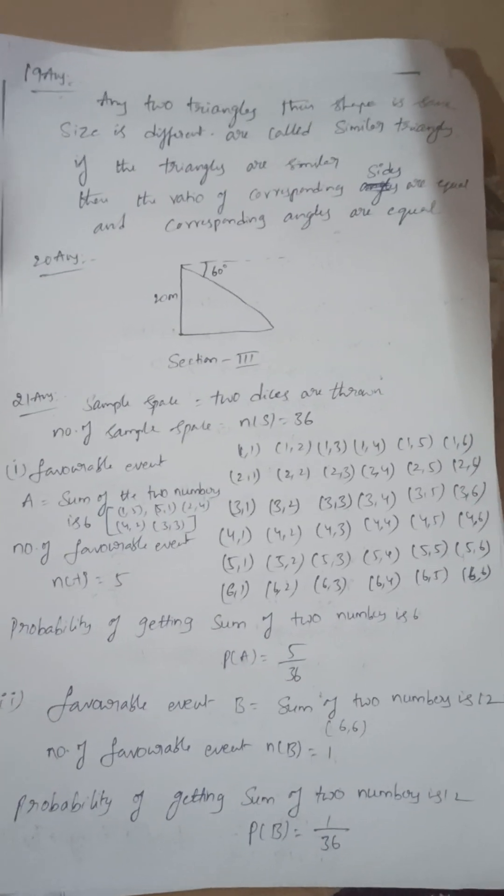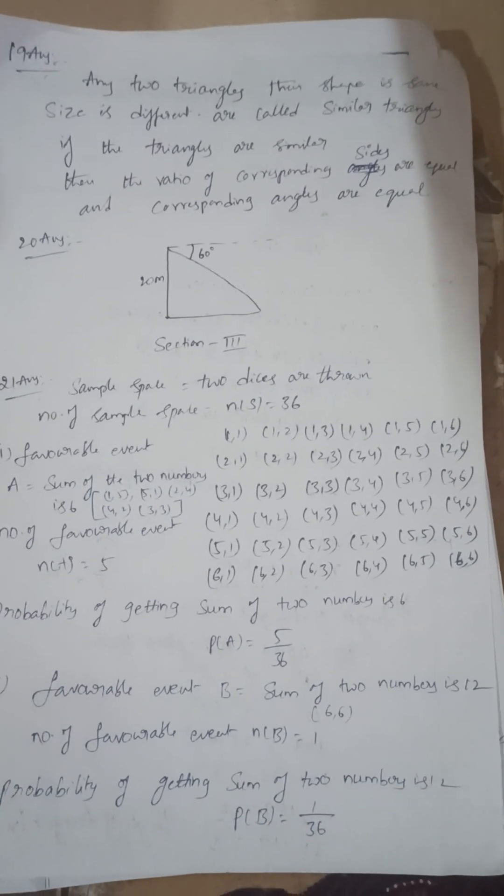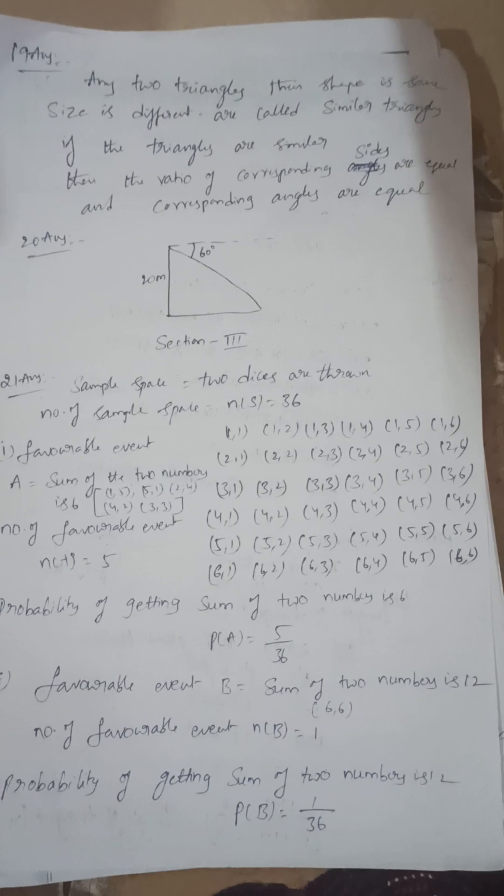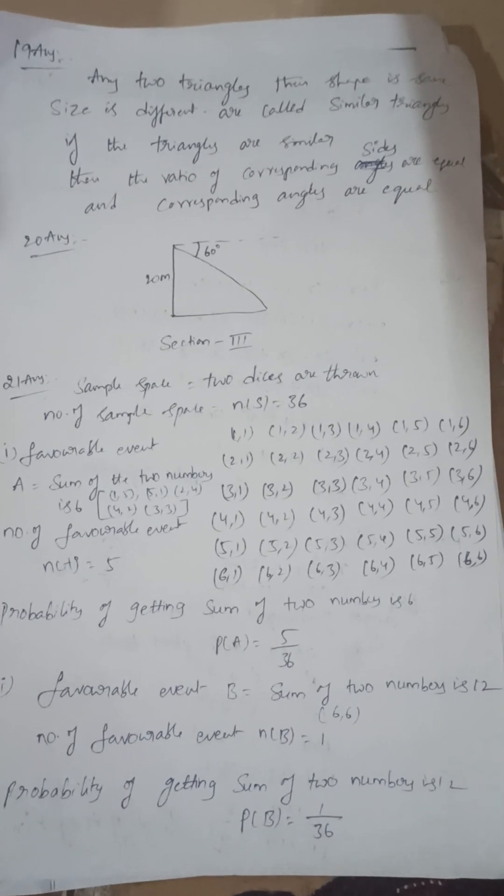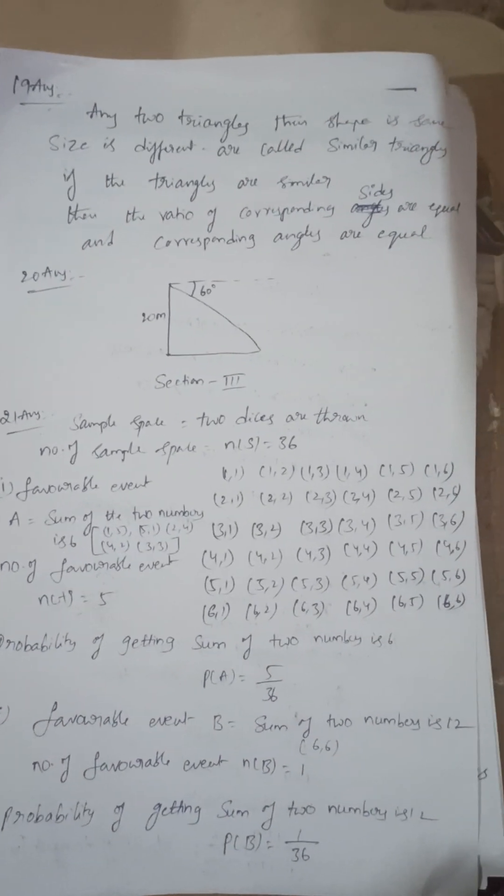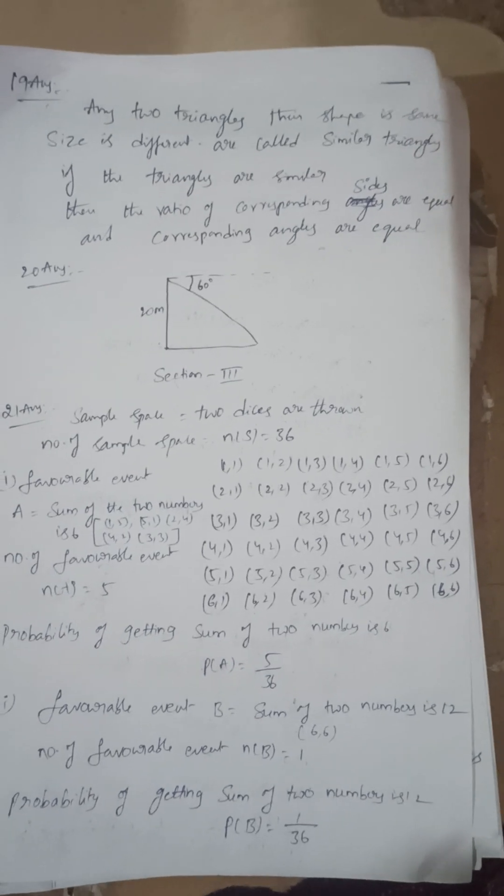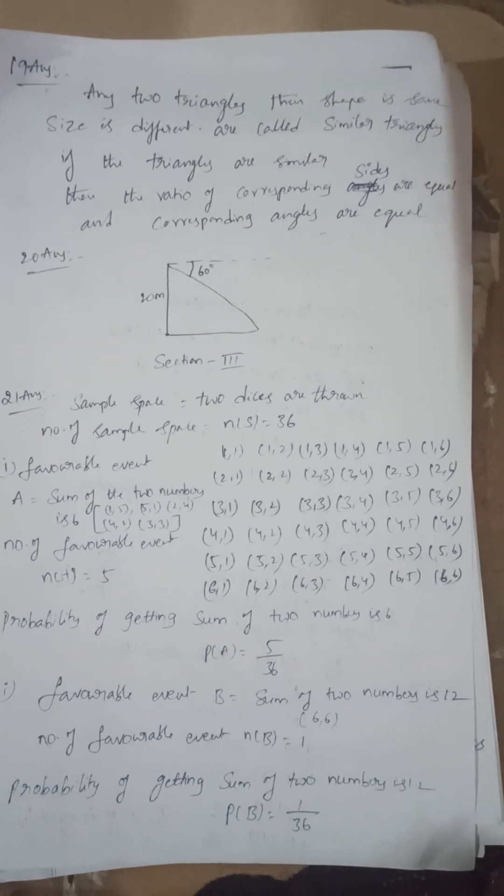Next, define similar triangles. If any two triangles have the same shape but different size, they are called similar triangles. If the triangles are similar, then the ratio of the corresponding sides are equal and corresponding angles are equal.